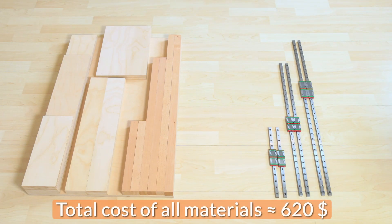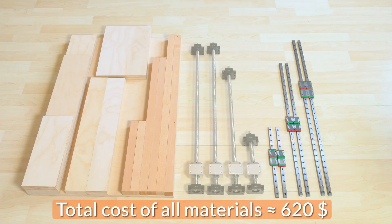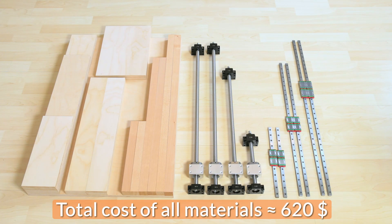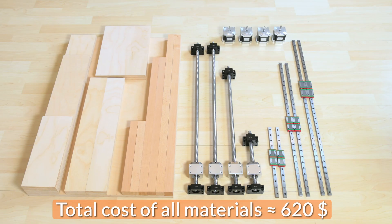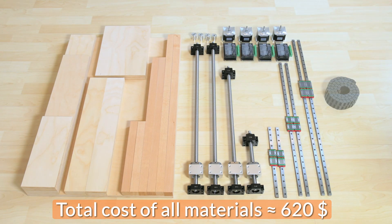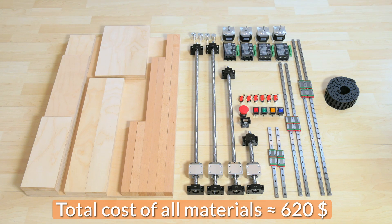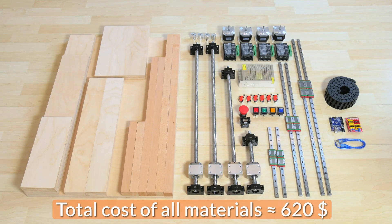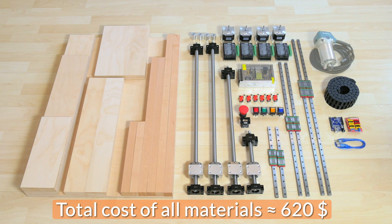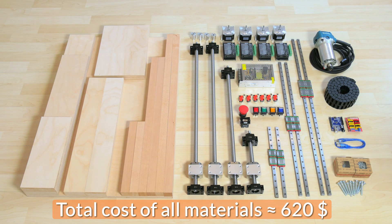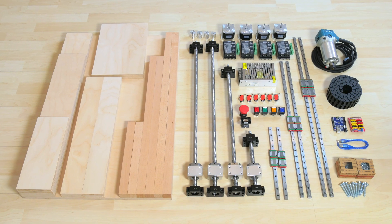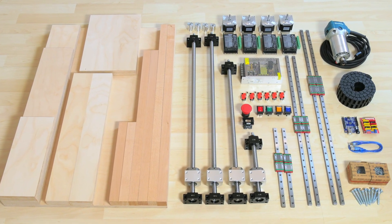two linear rails for each axis with two carriages each, the lead screws, four stepper motors, the motor couplers and the motor drivers, two drag chains, a couple of switches and limit switches, an Arduino Uno with CNC shield, a DC power supply, a router and various screws and cables. As always the complete parts list can be found in the video's description below.